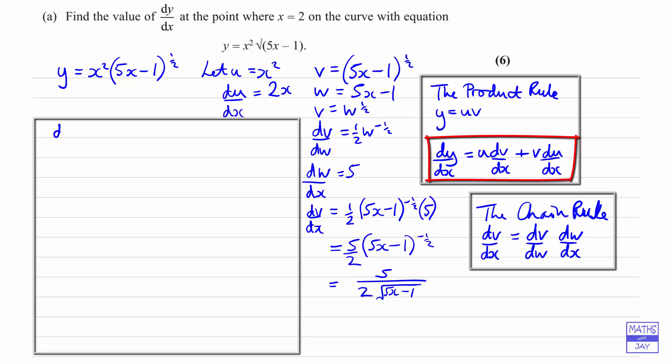So dy by dx is going to be u, so that's x squared multiplied by dv by dx. So let's just put that in a bracket, so that's 5 over 2 times the square root of 5x minus 1. And then we're adding on v times du by dx. So that's going to be the square root of 5x minus 1, that's our v, and du by dx is 2x. So I've shown this so it's clear to see where the u, dv by dx, v and du by dx are all coming from.